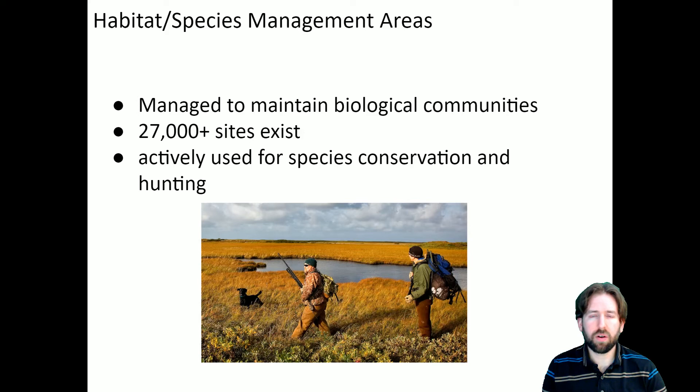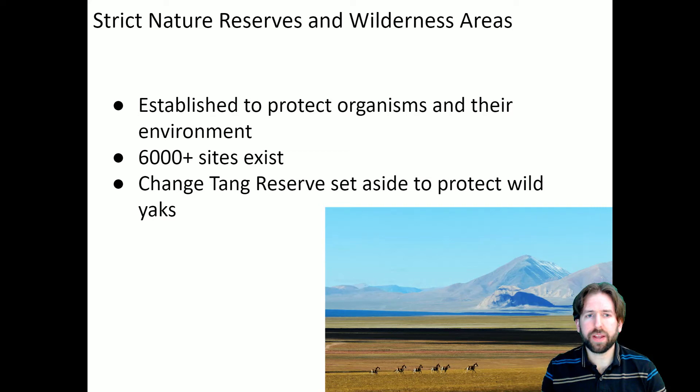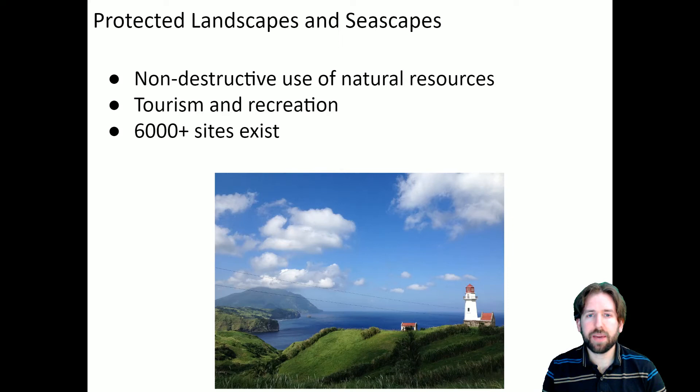Habitat and species management areas are mostly there to maintain biological communities. This means they are managed so that there can be hunting and conservation on these sites, and they are a bit more common with 27,000 plus sites globally. Strict nature reserves and wilderness areas are much more careful in how they protect their organisms — they do not allow hunting and are there to fully protect the things that live there and the environments they live in. For protected landscapes and seascapes, they do allow the extraction of natural resources but it must be non-destructive. There is also tourism and recreation in these areas, and there are 6,000 plus sites globally.